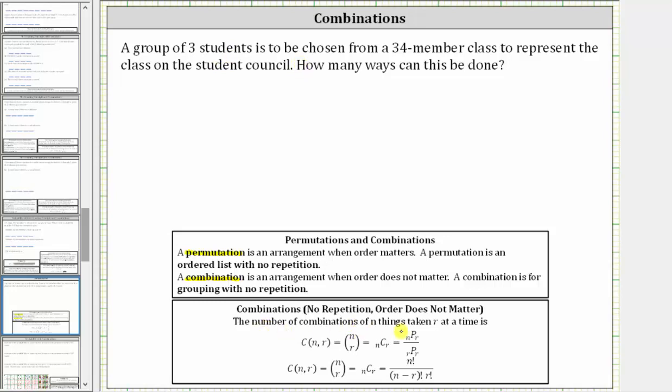The number of combinations of n things taken r at a time can be expressed using any of these three notations, which is equal to n factorial divided by the product of the quantity n minus r factorial and r factorial.